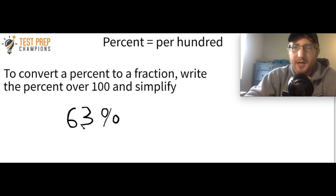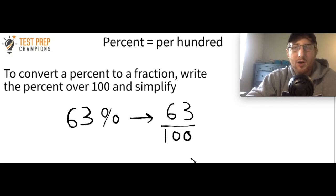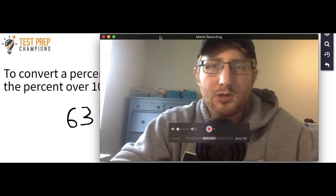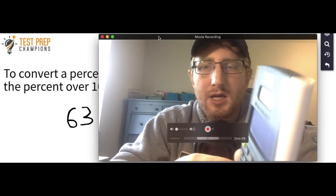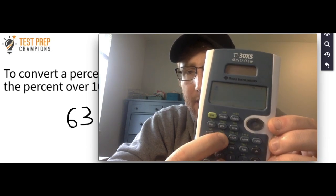Here's another example. We have 63%. Now's your chance to pause the video and try to convert this percent to a fraction. Hopefully you had a chance to try this. The first step is to take the 63 and write it over 100. In this case, there's nothing to simplify — 63 over 100 is already in its lowest form. So the answer is just 63 over 100. You can simply use the calculator if you're not sure if something's in simplest form. You start by pressing this N over D key right here.